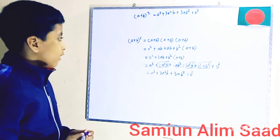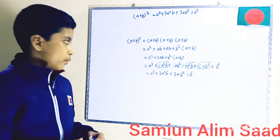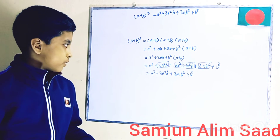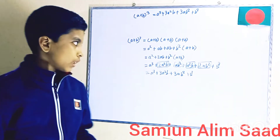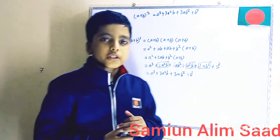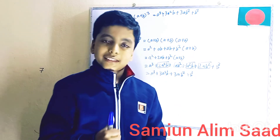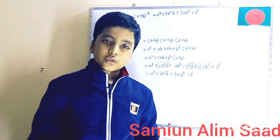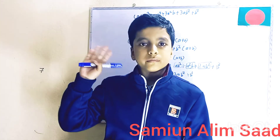We now have the proof for this formula: A plus B whole cube is equal to A cube plus 3A square B plus 3AB square plus B cube. Thanks for watching, make sure to like and subscribe. Bye bye!